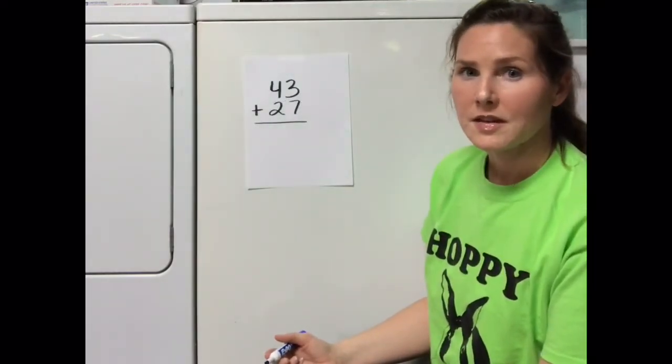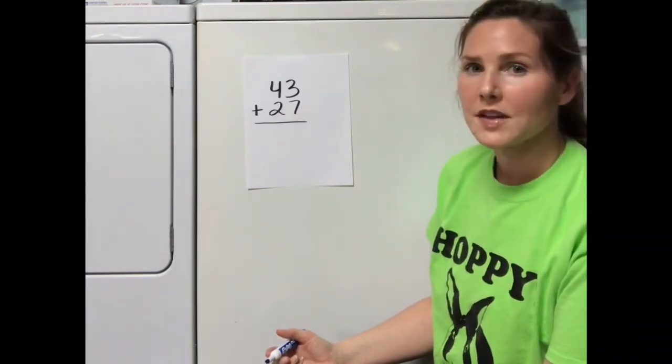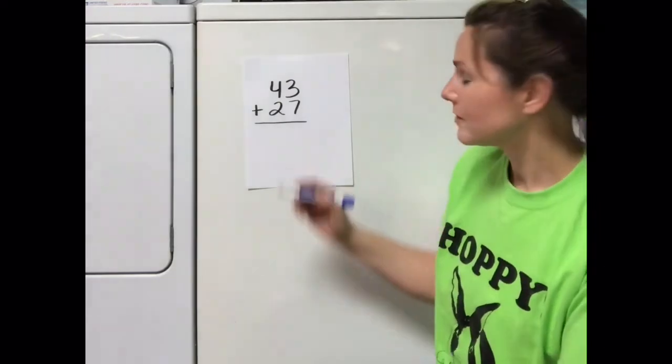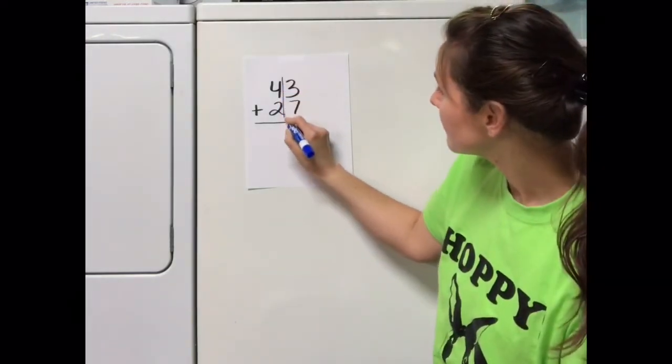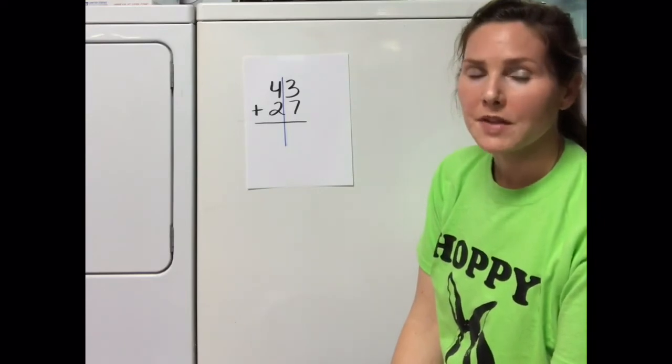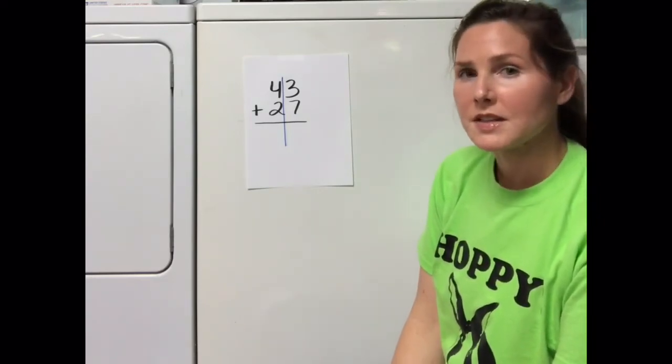Let's do one last example together. This problem says 43 plus 27. I'm going to start by dividing the ones and the tens columns. The ones column says 3 plus 7. 3 plus 7 is equal to 10.